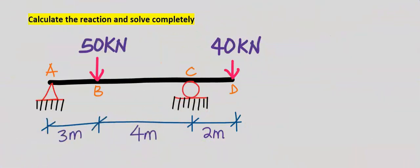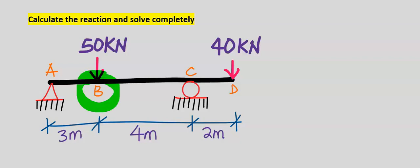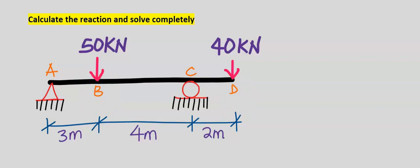Let's find the reaction forces on this overhanging beam. This overhanging beam is pinned supported at point A, and at point C is a roller support. There is a point load at point B and point D which are 50 kilonewton and 40 kilonewton respectively. To solve this problem: